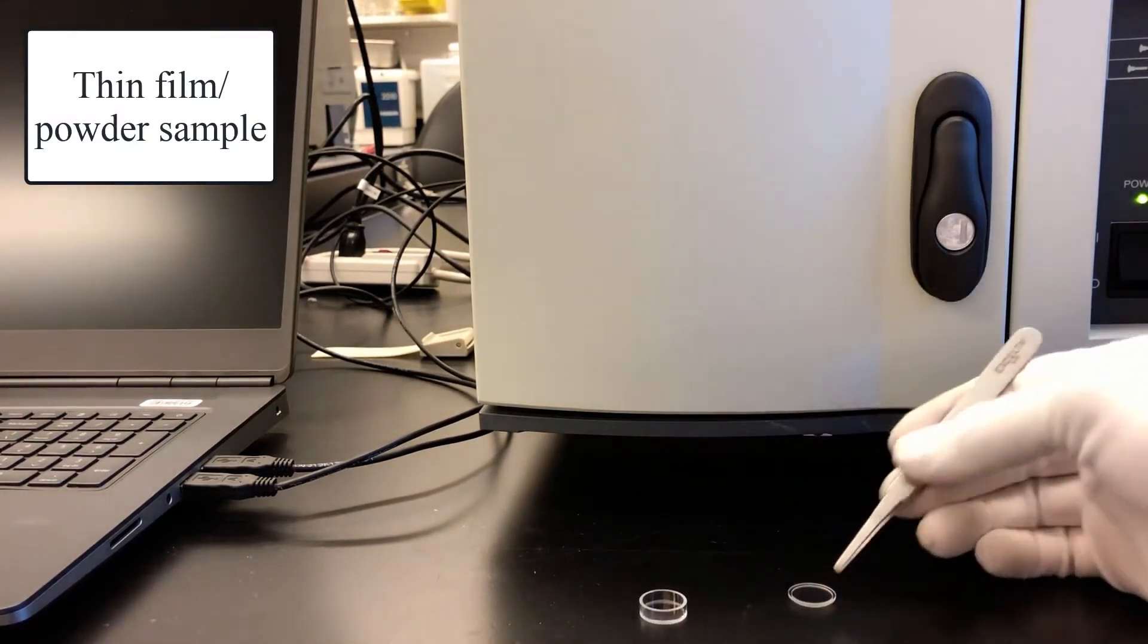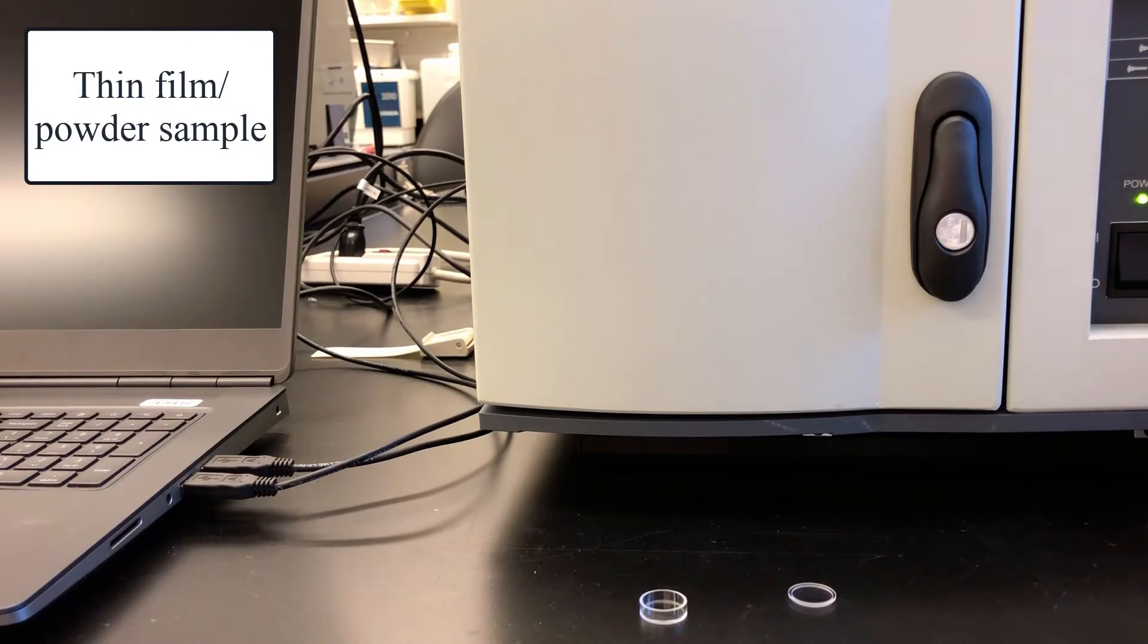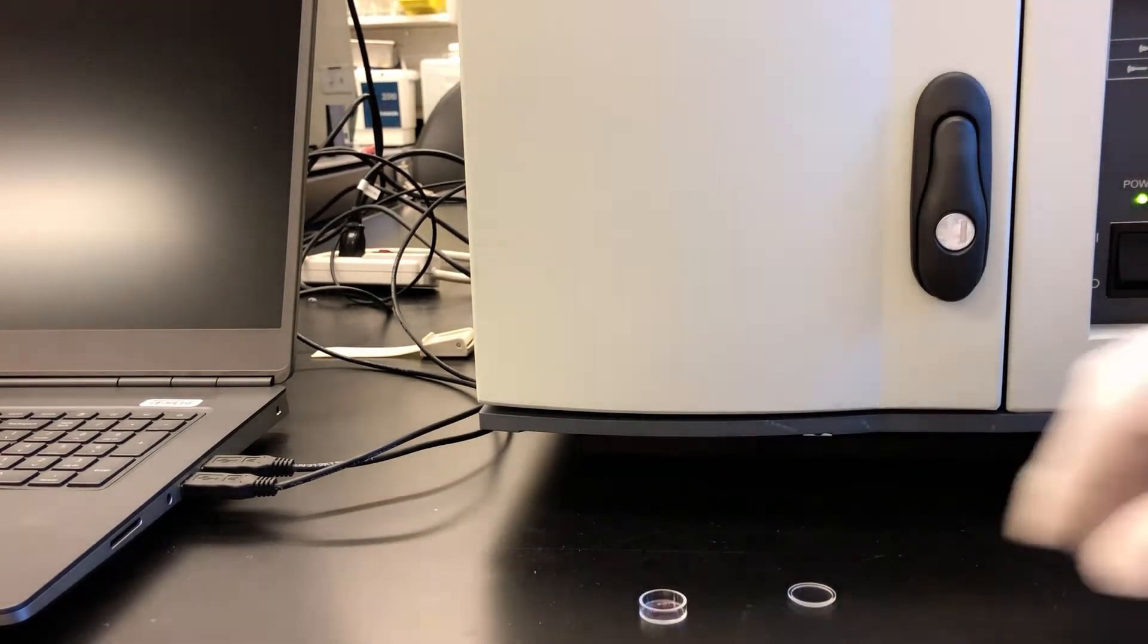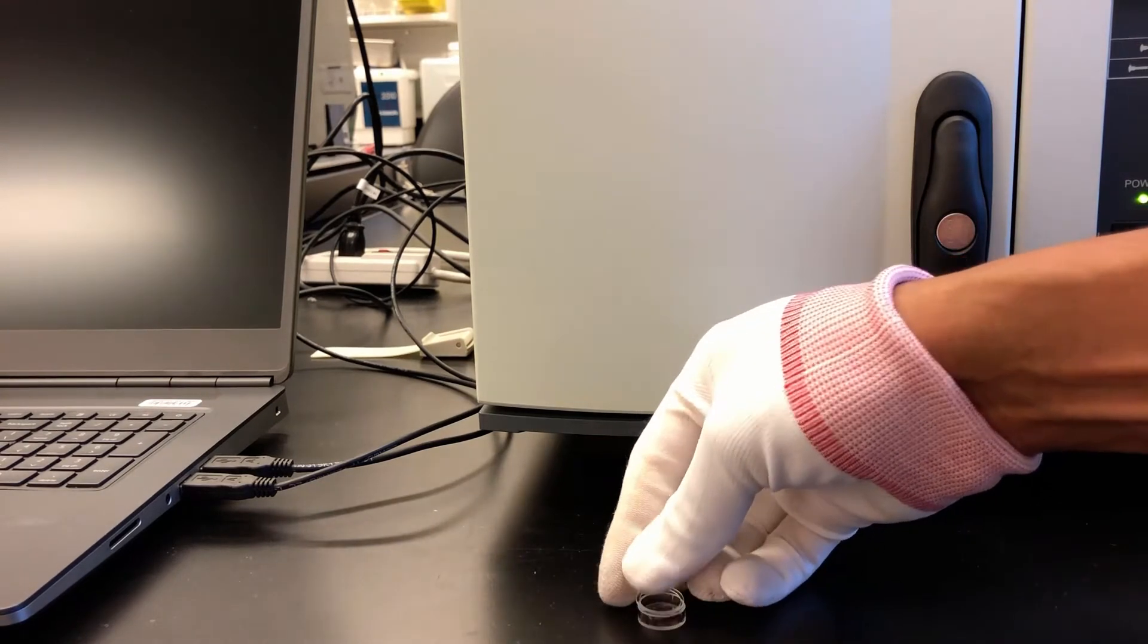Here we have a sample tray for a thin film or powder sample. I'll load up a thin film of the same material, P3HT, and open up chamber B on bottom.